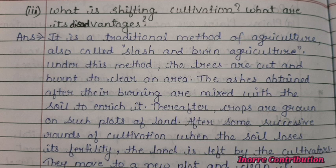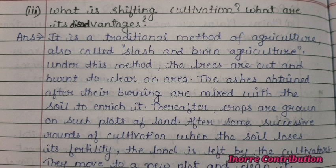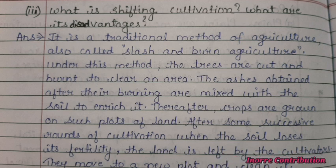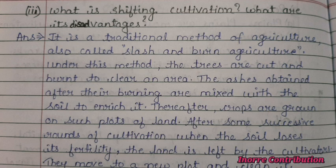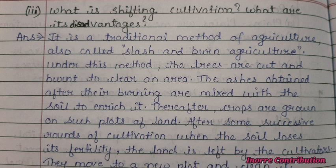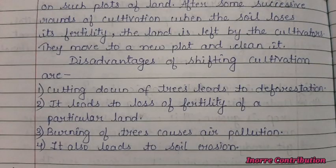Next question: What is shifting cultivation? It is a traditional method of agriculture, also called slash and burn agriculture. Under this method, trees are cut and burned to clear an area. The ashes obtained after burning are mixed with the soil to enrich it. Thereafter, crops are grown on such plots of land.